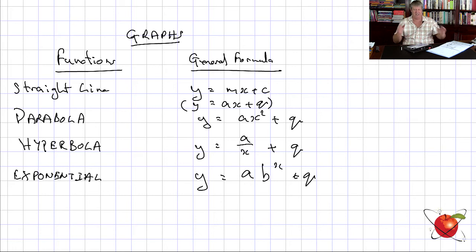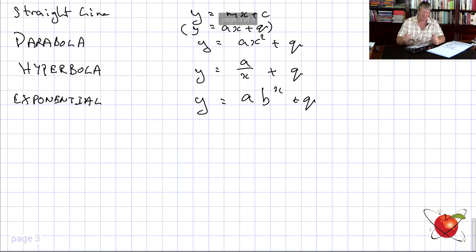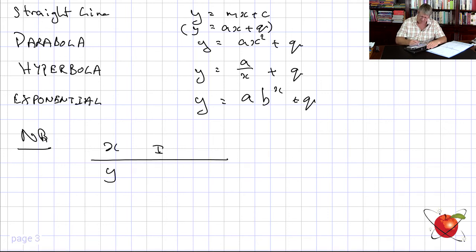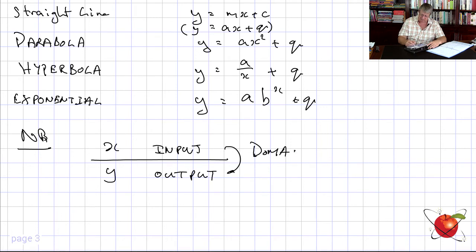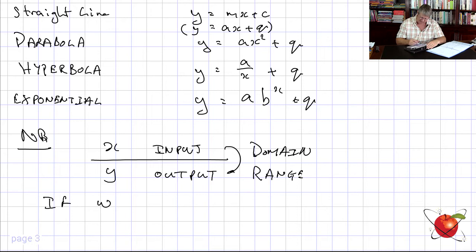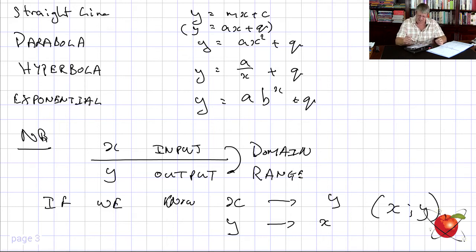Notice the similarities — we've got a's and q's coming in across all these formulas. Always remember: x is the input (domain) and y is the output (range). If we know x we can work out y, and if we know y we can work out x, because they go together as ordered pairs — they are coordinates.